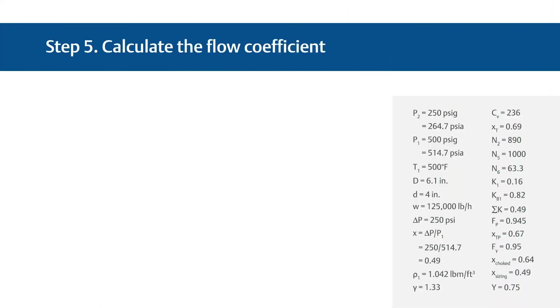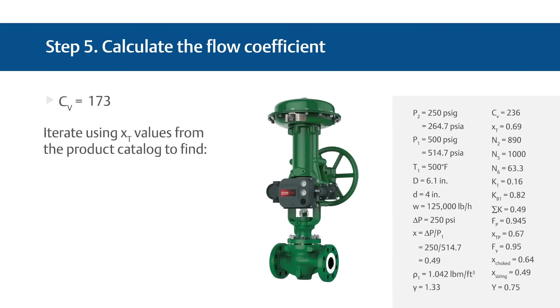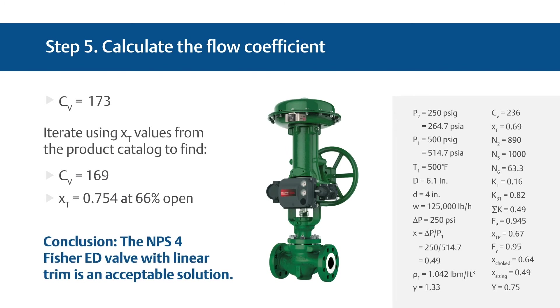Finally, for Step 5, calculate the required flow coefficient, or CV. Use the standard equation for CV and apply the variables for a value of 173. Repeat the calculation using the published X sub T values for the valve until agreement is obtained between CV and X sub T. This results in a required CV of 169 and X sub T value of 0.754. This occurs at about 66% open, so the NPS 4 DN 100 Fisher ED valve with linear trim would be an acceptable solution with respect to capacity.